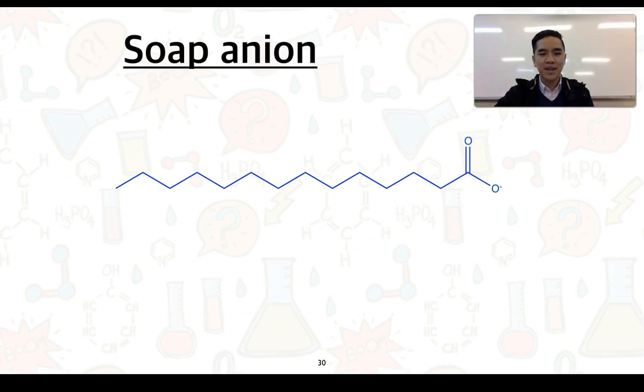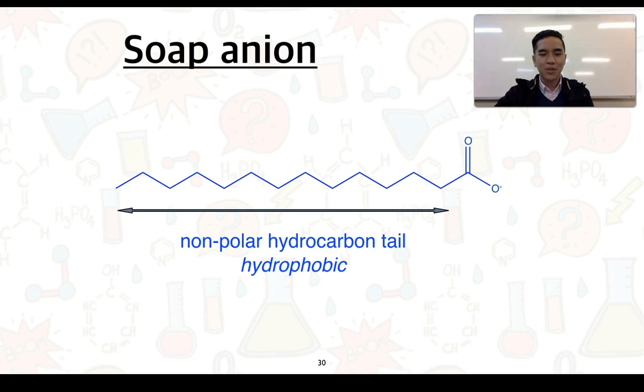The first component here is what we call a non-polar hydrocarbon tail, and a term we use to describe it is hydrophobic, which means it is water-fearing, or it does not interact with water. Over to the right, we can see we have this carboxylate anion group, and we typically refer to this as the ionic head. This head is hydrophilic or water-loving.